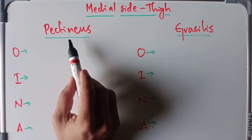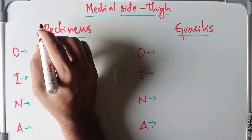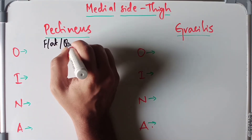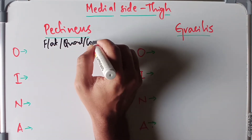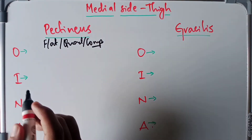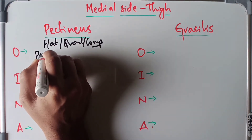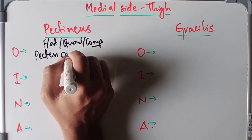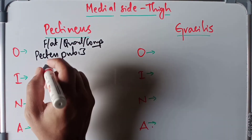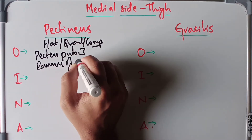Beginning with the pectineus: it is a flat, quadrilateral composite muscle. Its origin arises from the pectineal line of the pubis as well as the upper half of the ramus of the pubis.